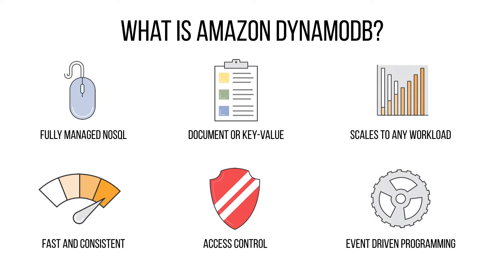Dynamo is a hosted NoSQL database offered by AWS. It is called a database service as it's totally managed by AWS, which means you don't need to install it, operate it, or scale it up — you just use it. That's one of the magic things about Dynamo. It is a document or key-value NoSQL database and it scales very well to massive numbers, and it also scales down almost to zero. So you can use it for very small projects or for amazingly big projects.